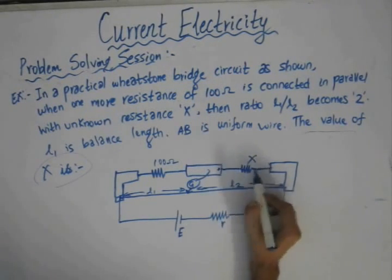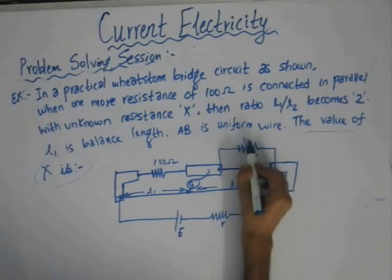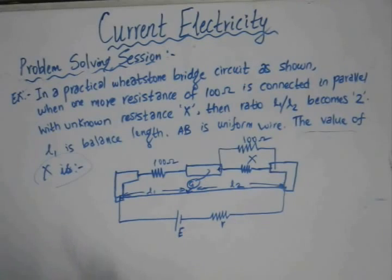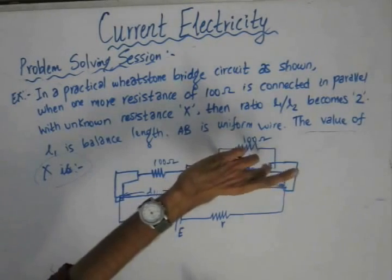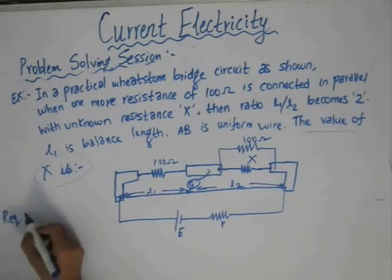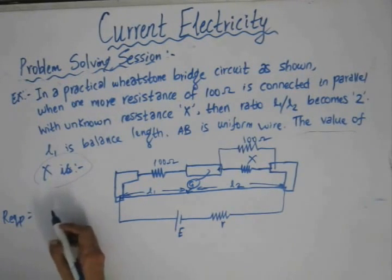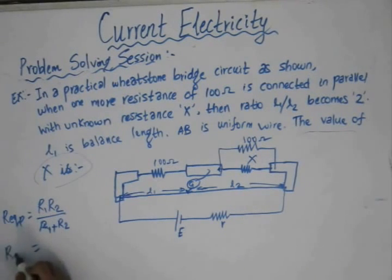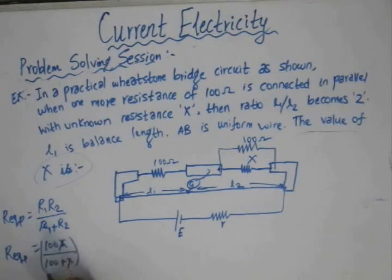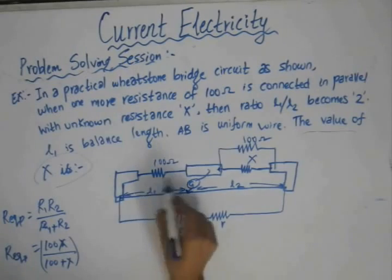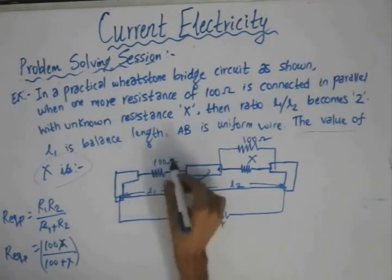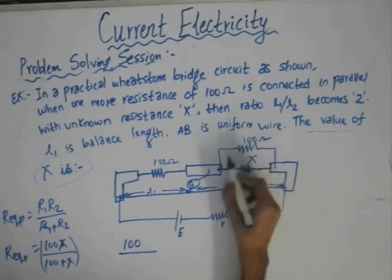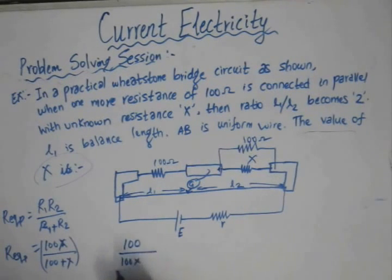A resistance of 100Ω is connected in parallel with the unknown resistance X. Solving for the equivalent resistance in the right gap using the parallel formula R1R2/(R1+R2), we get 100X/(100+X). As per the meter bridge formula for the balancing condition, the ratio of resistance in the left gap (100Ω) to the right gap (100X/(100+X)) equals the ratio of balancing lengths.